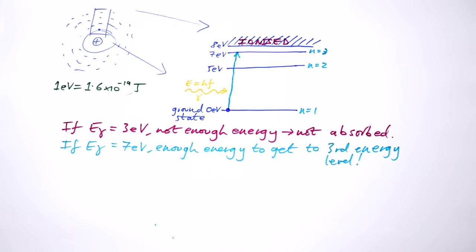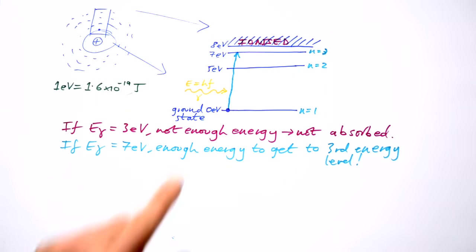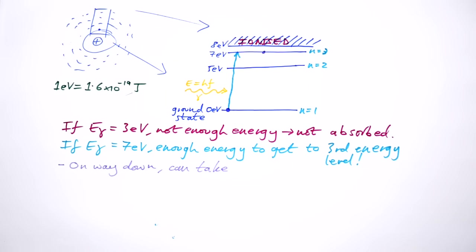We said that electrons like being at their ground state. They want to come back to here as soon as possible. Now on the way back down from here, the electron now has a choice.